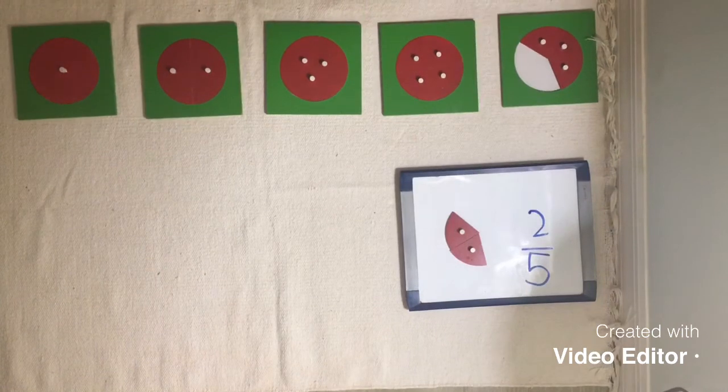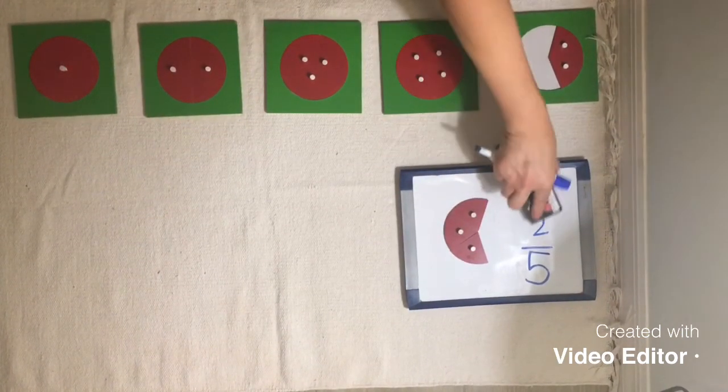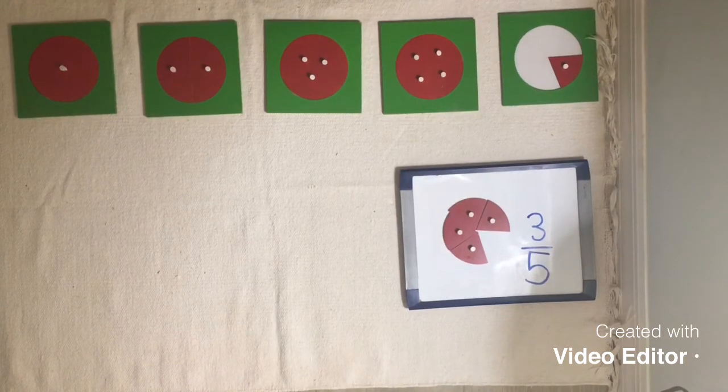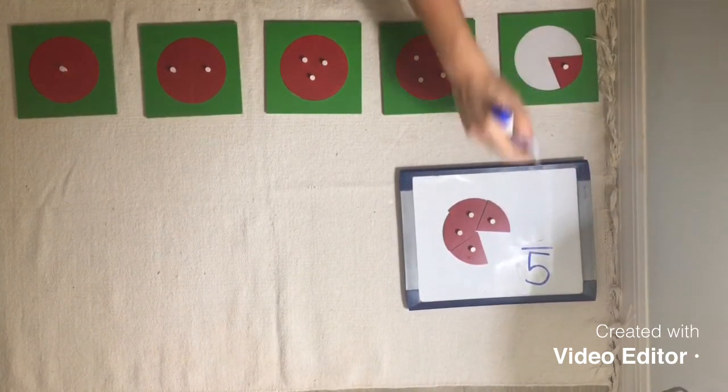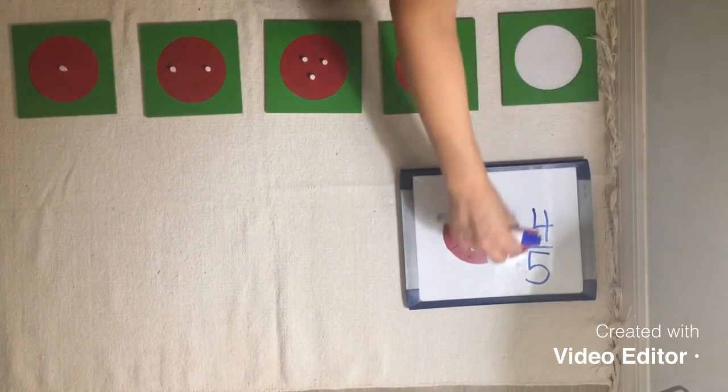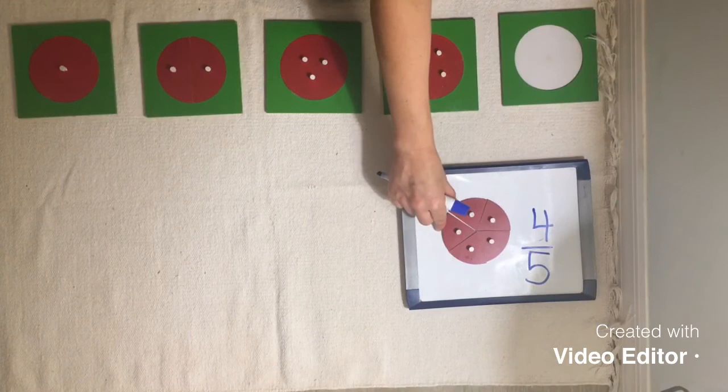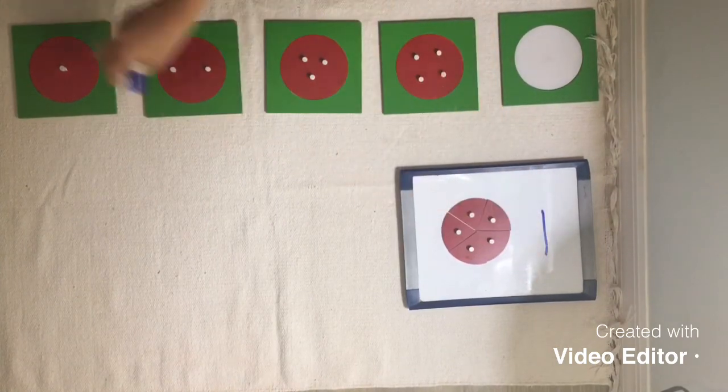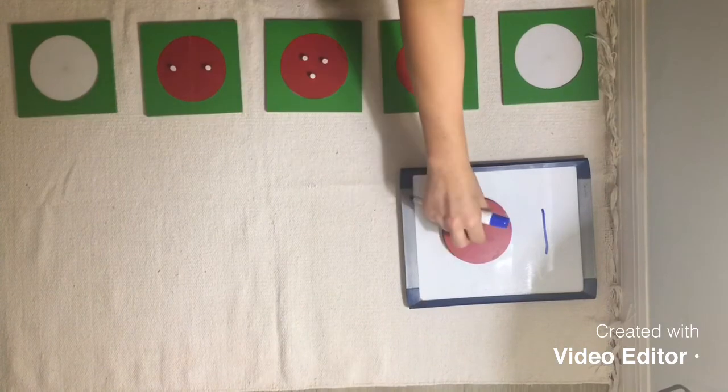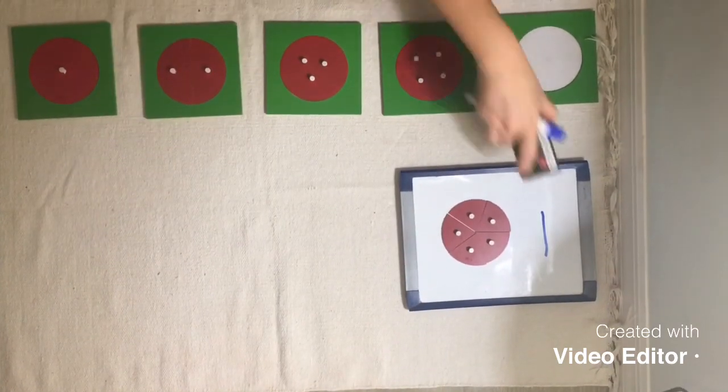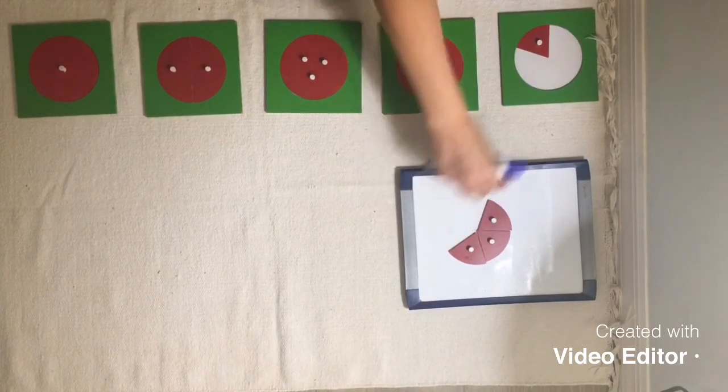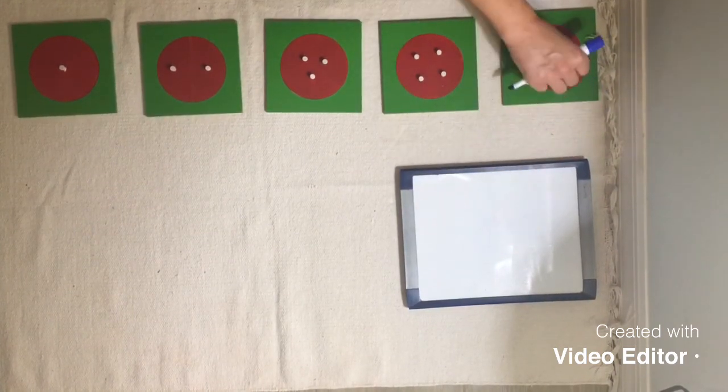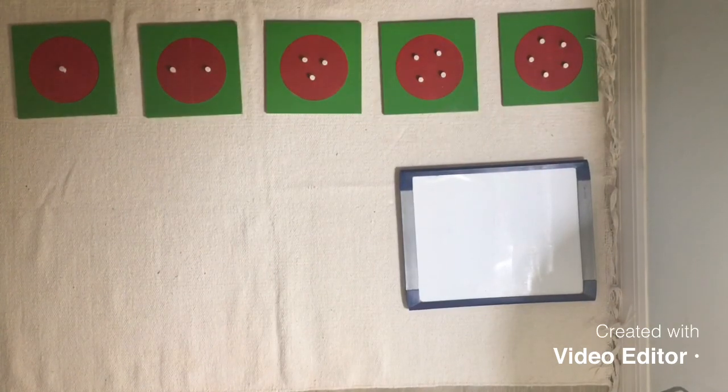Two fifths. Two fifths. Three fifths. Four fifths. And finally, five fifths. Five fifths. Which is actually the same as one whole. One fifth. Two fifths. Three fifths. Four fifths. Five fifths. One whole. All right, let's go.